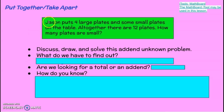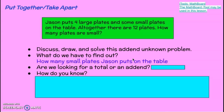Now listen to this problem. Jason puts four large plates and some small plates on the table. All together there are twelve plates. How many plates are small? So Jason still has four large plates and some small plates, and all together there are twelve. How is this like the one we just did, and how is it different? What do we have to find out? What's the question being asked? How many small plates did Jason put on the table? Are we looking for the total or the addend?